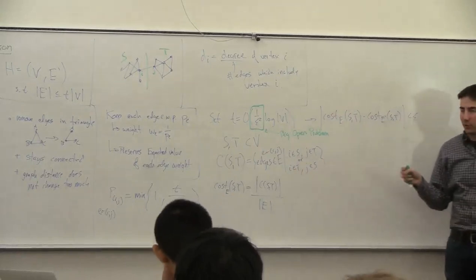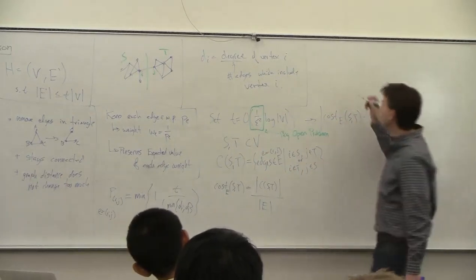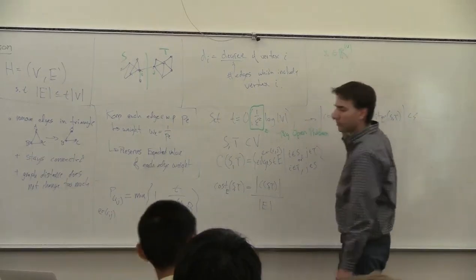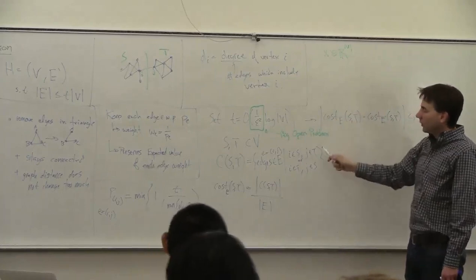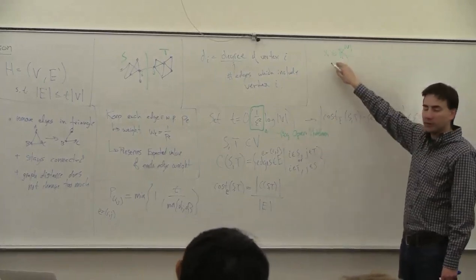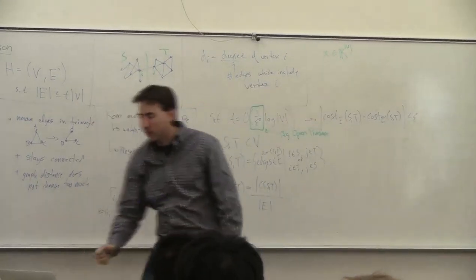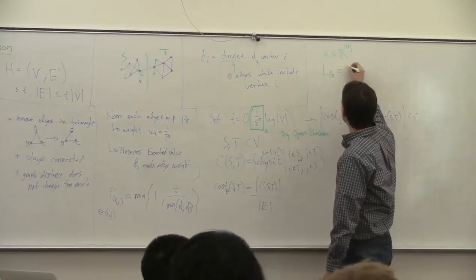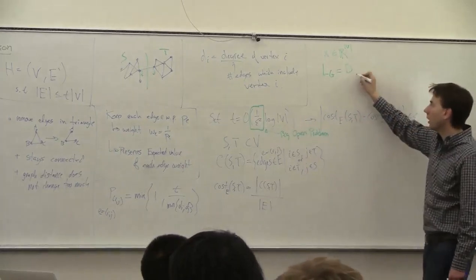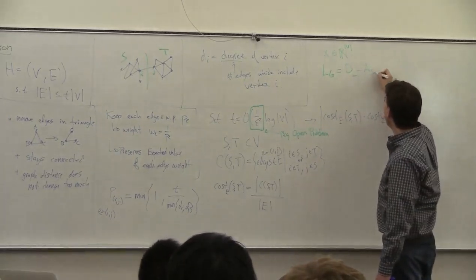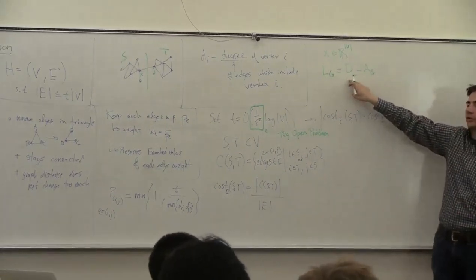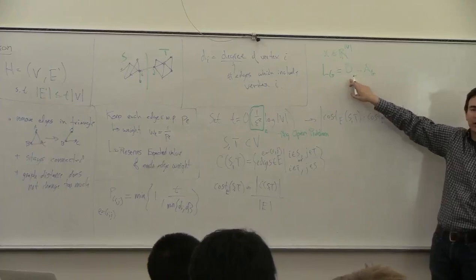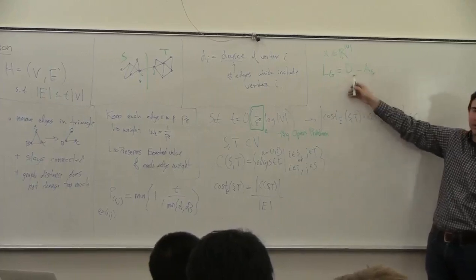But you can think of any vector where you put a weight on each of the vertices. What I want is some vector in R^V. I somehow want to measure how good the sparse version of the graph is against this vector. To do this, I need to write down the Laplacian of the graph.